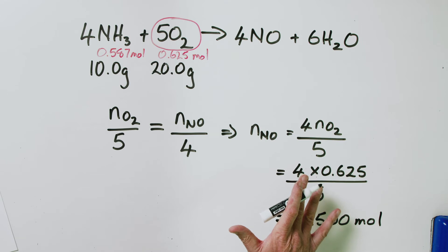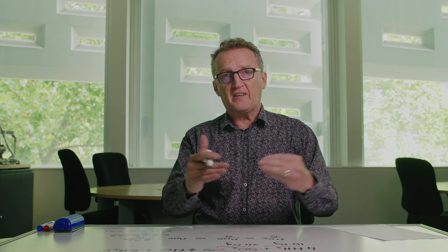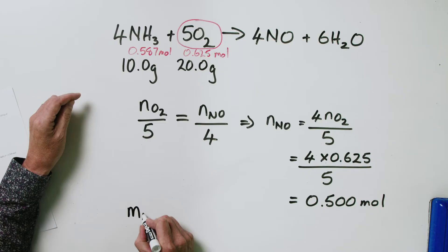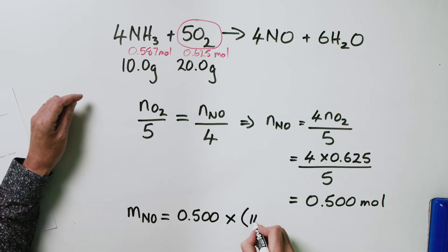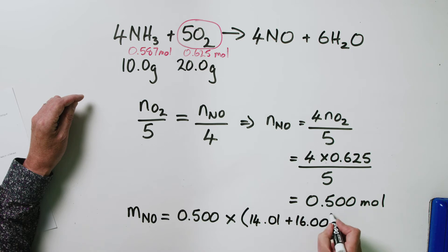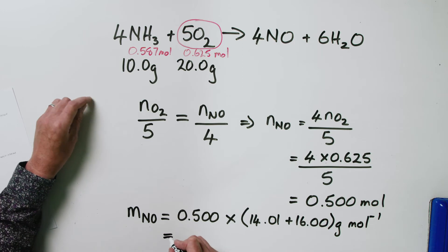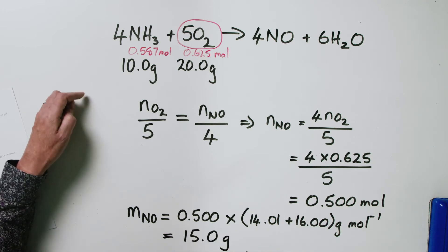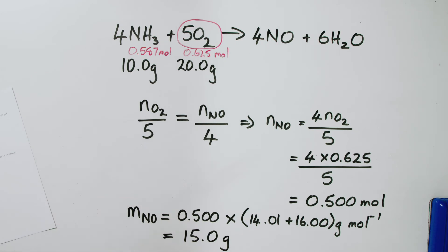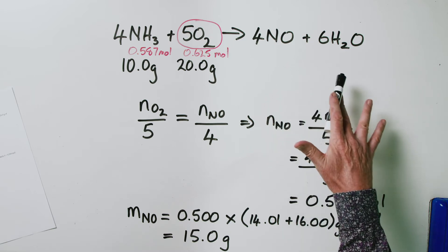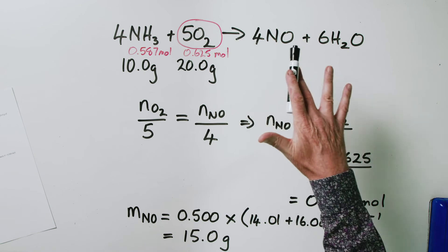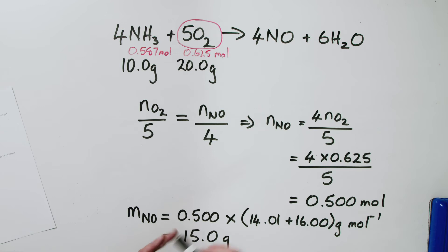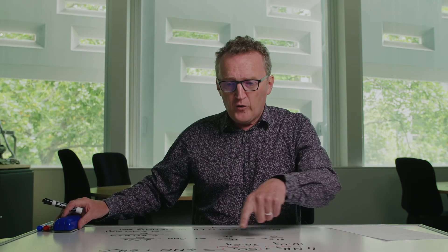Once you've got an amount and a molar mass, you can get a mass. The mass of NO equals 0.500 moles multiplied by the molar mass of NO: 14.01 plus 16.00 grams per mole. Multiply that out and the mass of NO is 15.0 grams. So from 10 grams of ammonia and 20 grams of oxygen, the maximum amount of NO you can get — assuming the reaction goes to completion — is 15.0 grams.